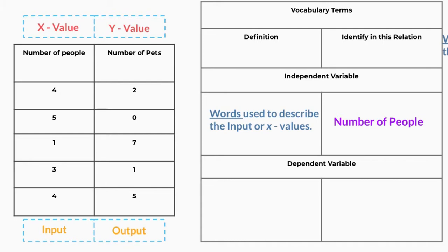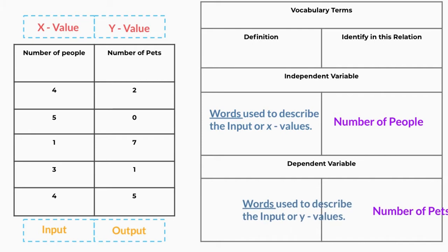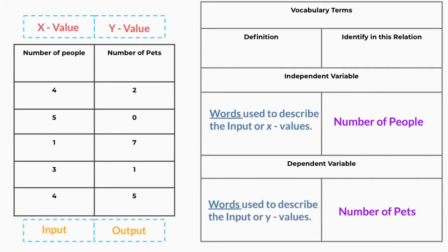The dependent variable is the words used to describe the output or y values. So in this particular relation, that's the number of pets. Now let's take a look at this in a few examples.